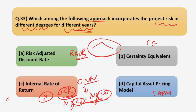The Capital Asset Pricing Model (CAPM) is used for pricing risky securities and generating expected returns for assets given their risk and cost of capital. This model is used to price securities and therefore is also not our answer — we can easily eliminate this option. Now we will discuss what RADR and Certainty Equivalent are.